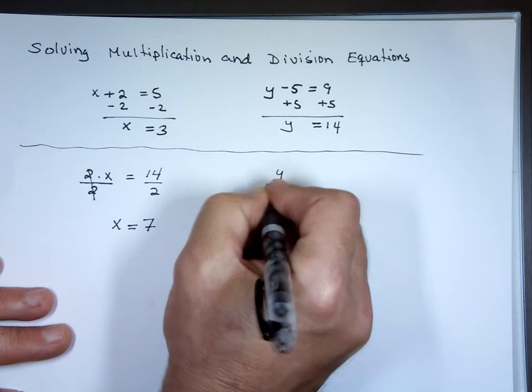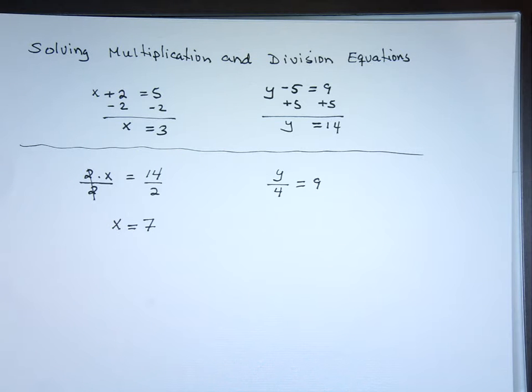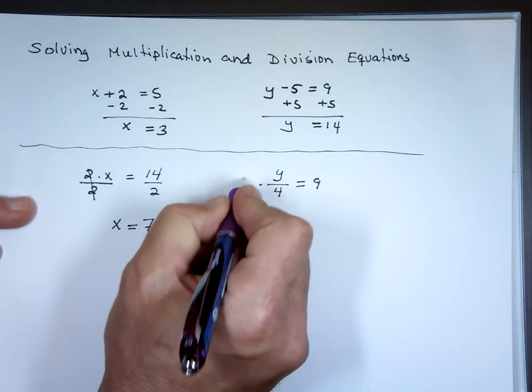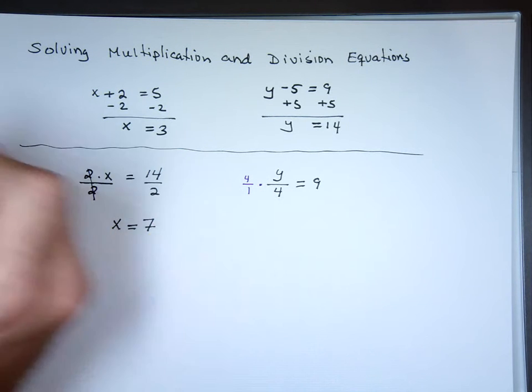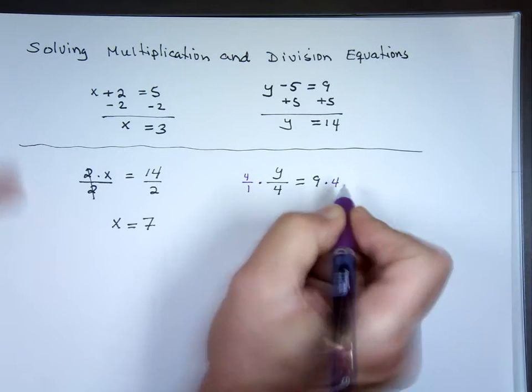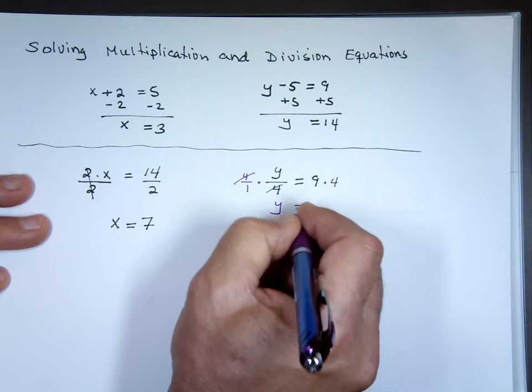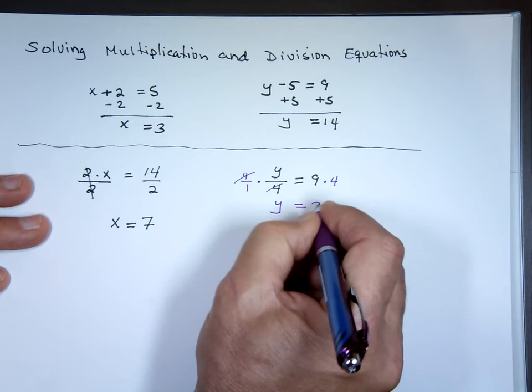So if I have y over 4 equals 9. The first thing I would do is get rid of the fractions. To get rid of the fraction, you've got to multiply this side by 4 over 1. And if you multiply this side by 4, you have to multiply that side by 4. y equals what? What's 9 times 4? 36.